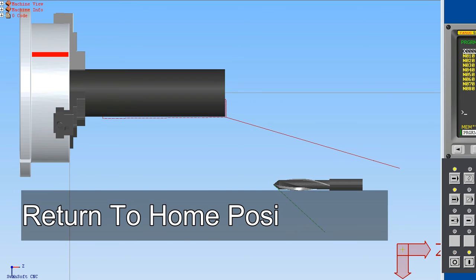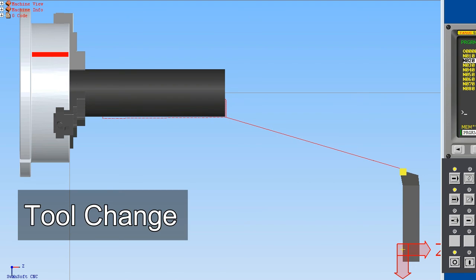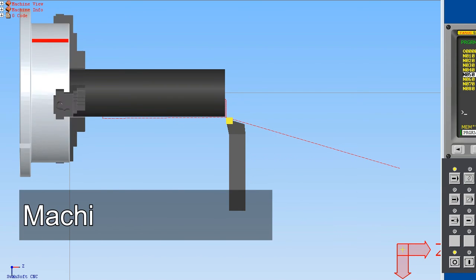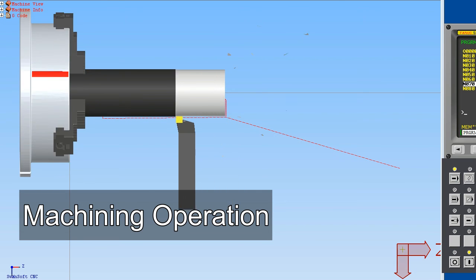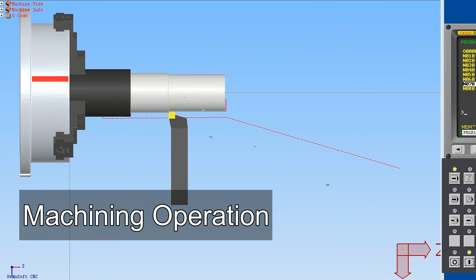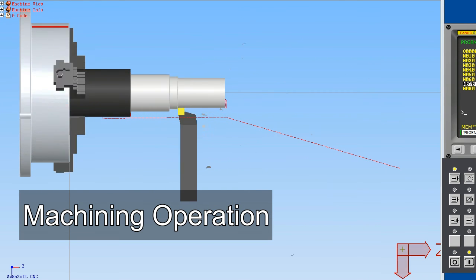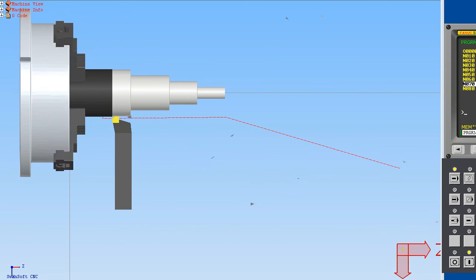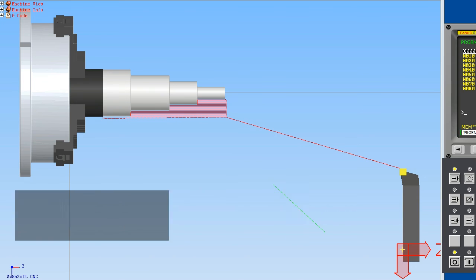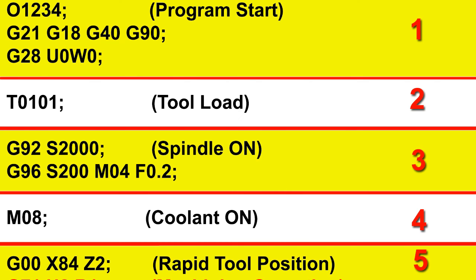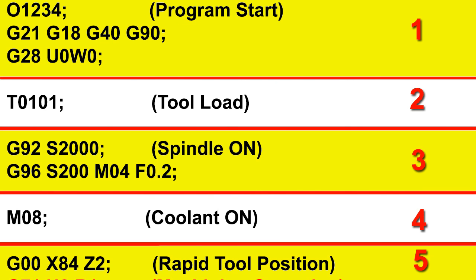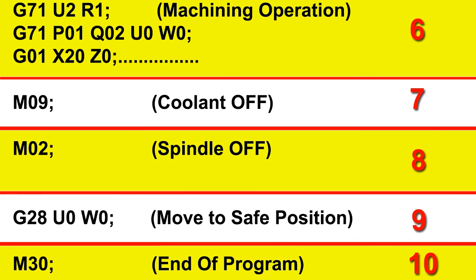This is our workpiece and we want to do a turning operation on it to get this profile. Here is the program for that. I have divided the whole program into the various steps which we have just studied, so that you can relate with them. Now let's run this program on the CNC machine and see how it goes. Everything was so simple — we learned those 10 steps, we made the program, we did turning on the workpiece, and we got our profile.